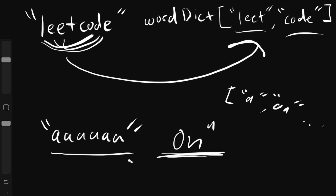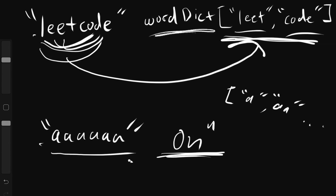We can improve this by implementing dynamic programming, which we use when we encounter overlapping subproblems. With dynamic programming, we eliminate redundant work by using an auxiliary list of booleans. This list will tell us whether up to a certain point we have a match within our word dict. For example, if we're looking for the word 'leet' in our string, we start from the beginning and use two pointers I and J — once we find the substring from I to J is in our word dict, we mark that index as true.